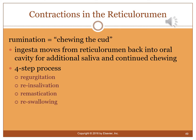Saliva contains amylase to help break down cellulose or carbohydrates. Ruminants practice rumination — chewing the cud — where ingesta moves from the reticular rumen back into the oral cavity to be chewed again and mixed with additional saliva. This is a four-step process: regurgitation, re-insalivation, re-mastication, and re-swallowing.